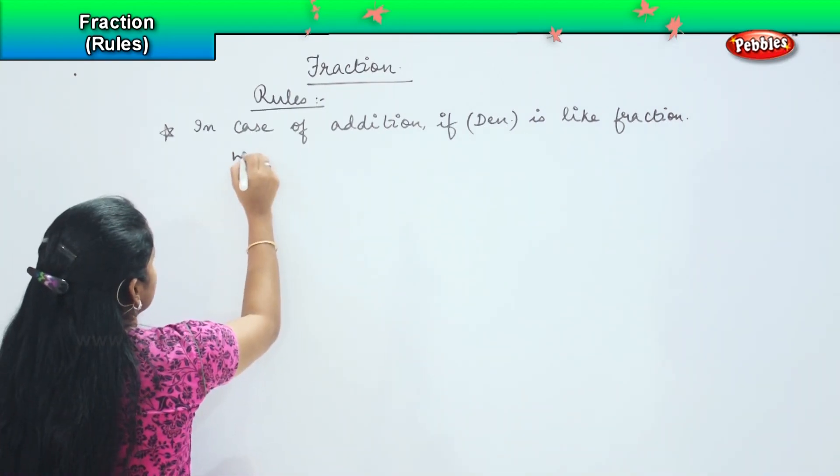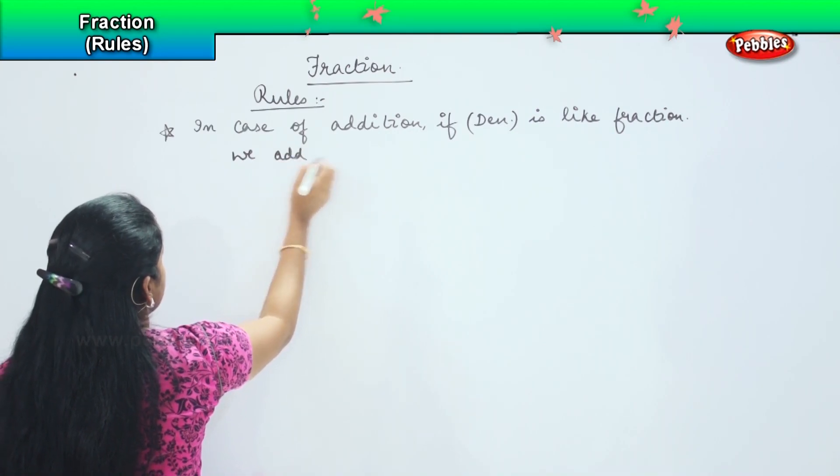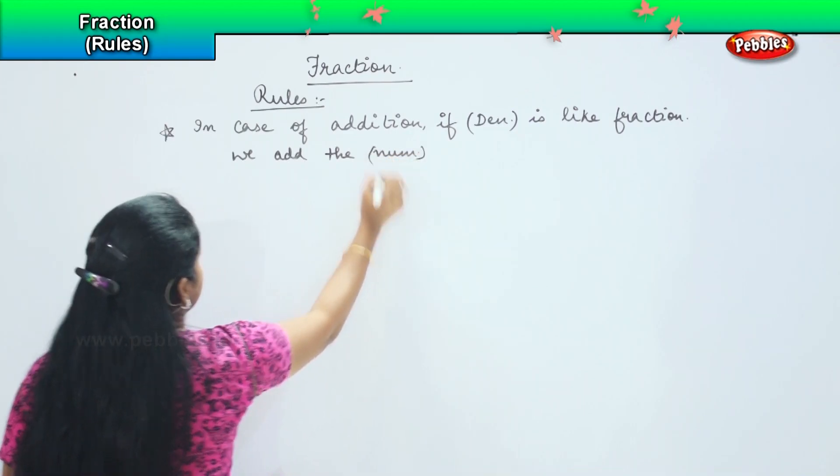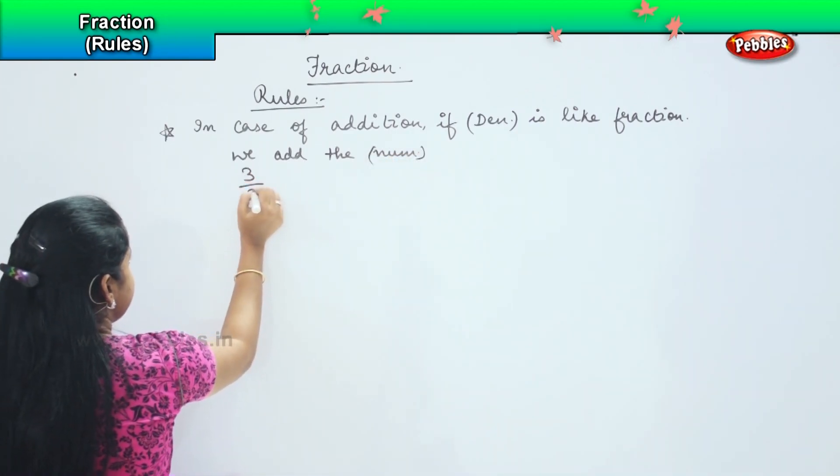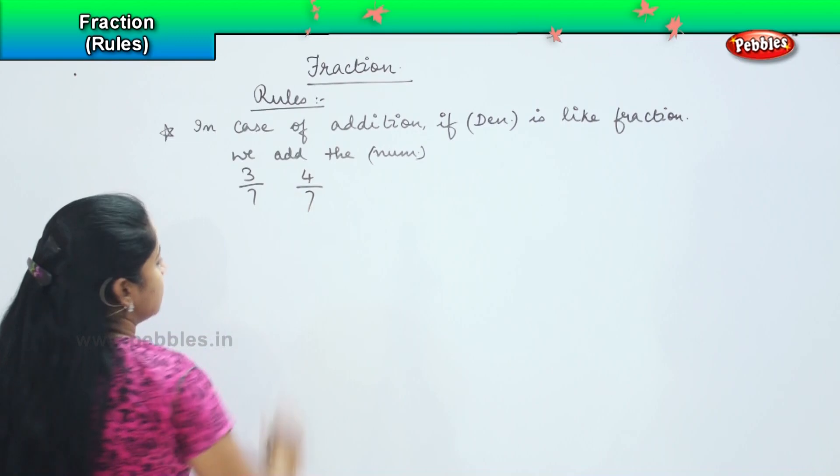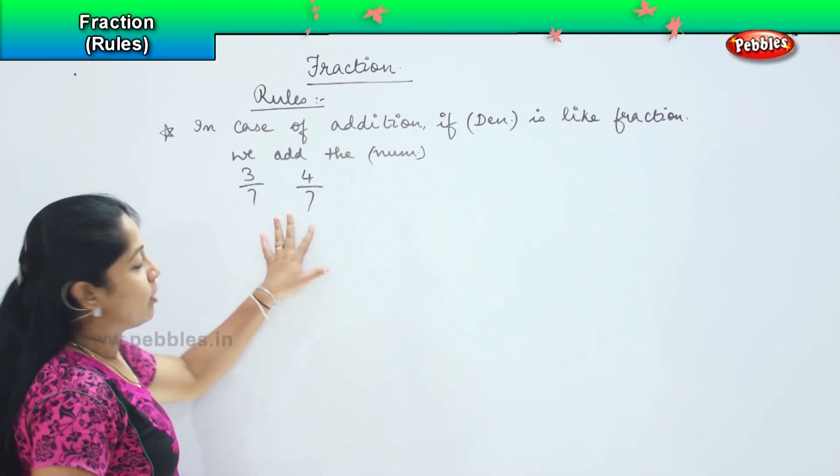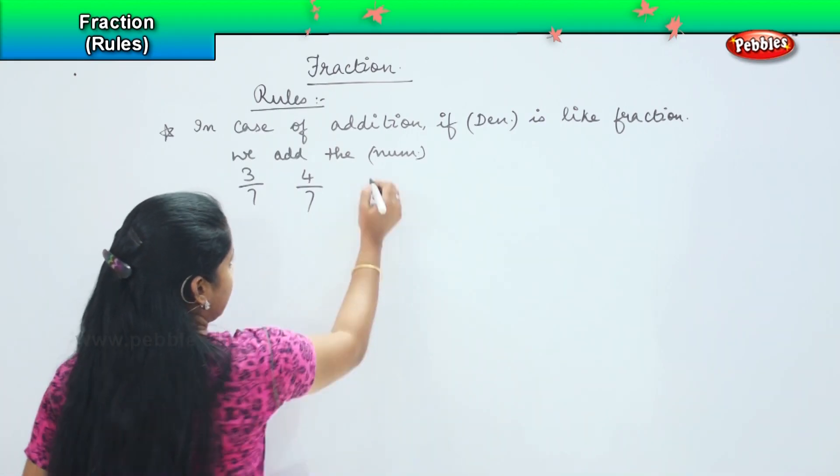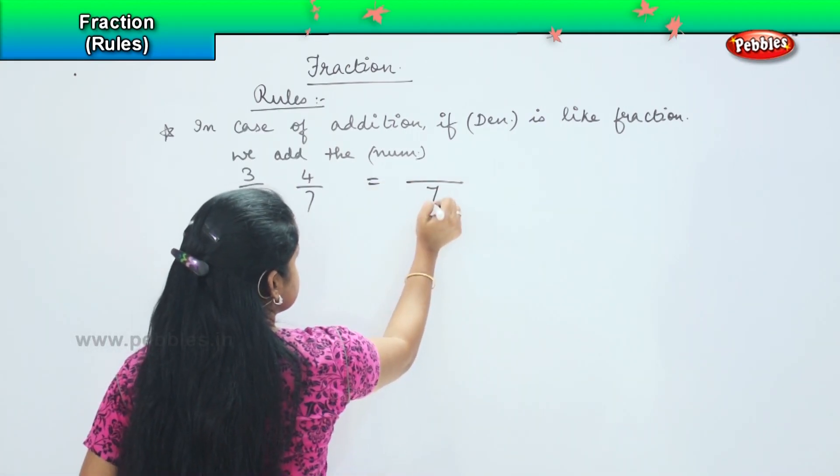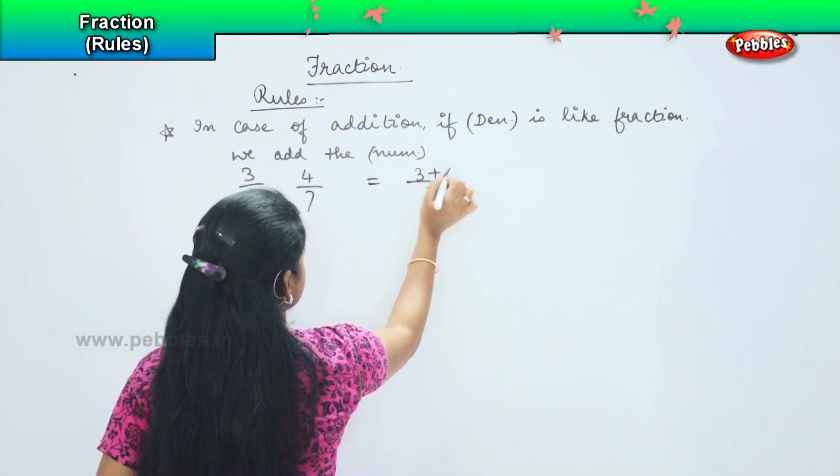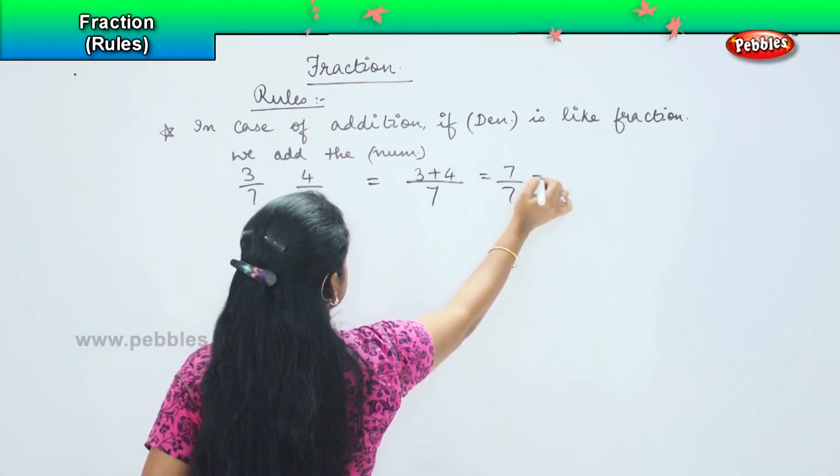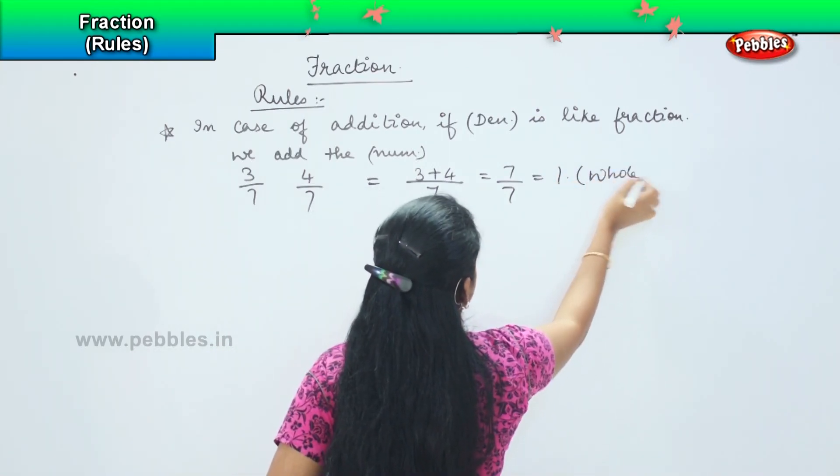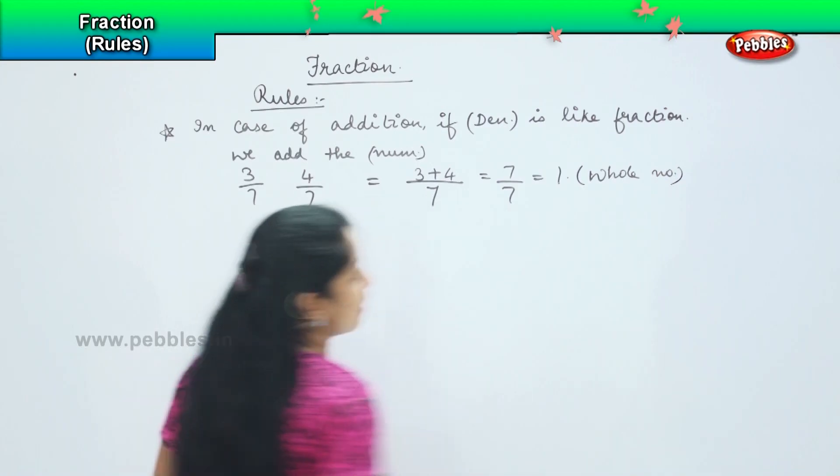We need to, we add the numerator. For example if I have 3 by 7, 4 by 7. So now I have the denominator both as the same number 7. So how will I add it? I will keep this as 7 and then 3 plus 4, which will be 7 by 7, which is nothing but 1, which is my whole number.